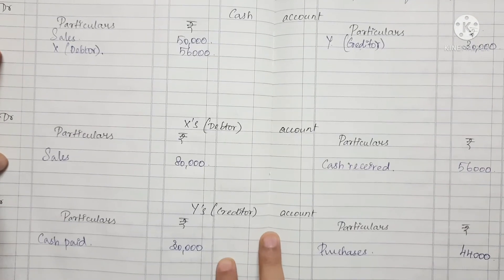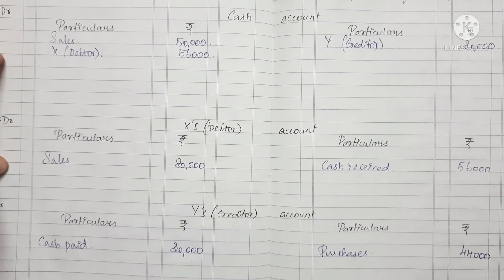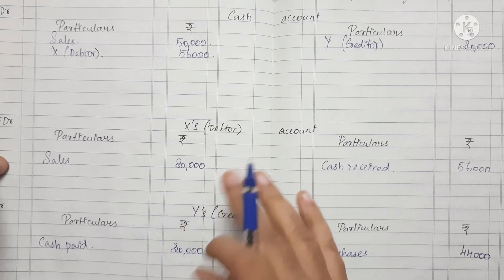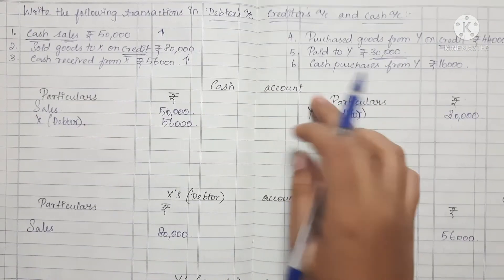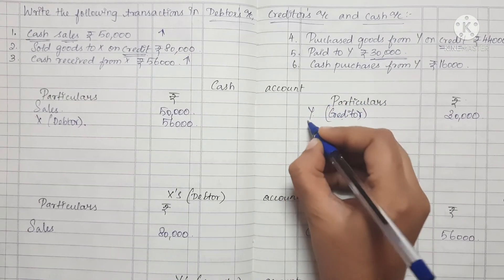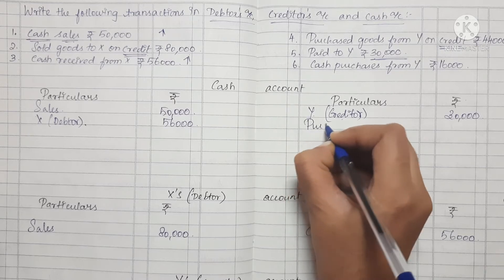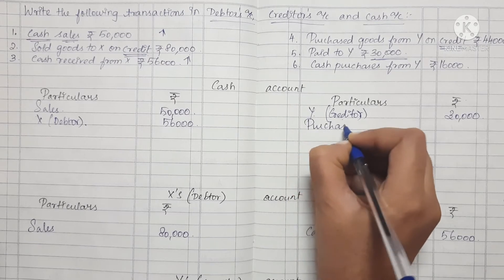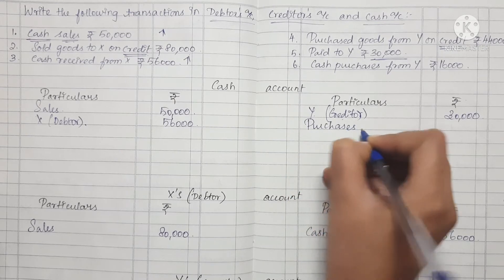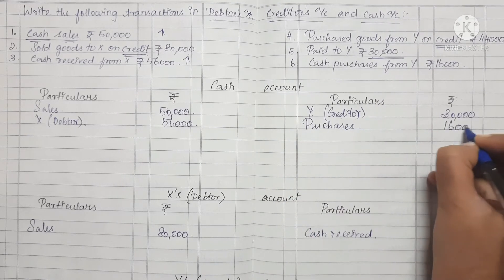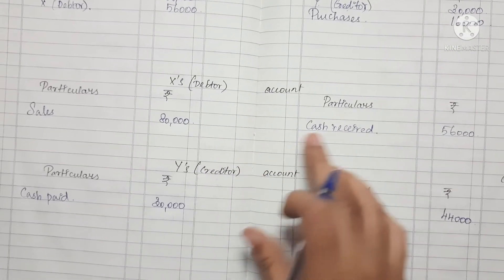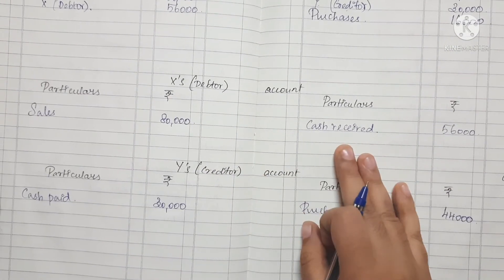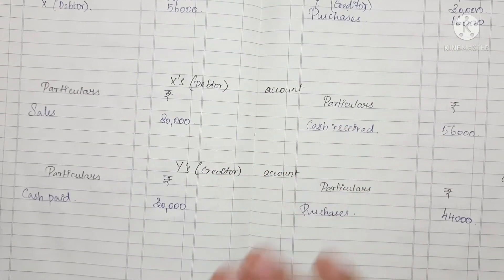Next is cash purchase from Y, Rs. 16,000. Since this is a cash purchase, we mention it in the Cash account on the Credit side as an outflow of cash.